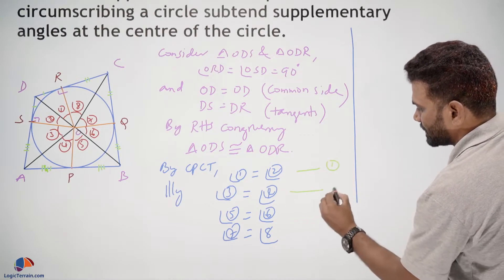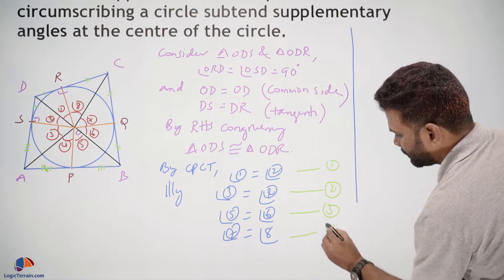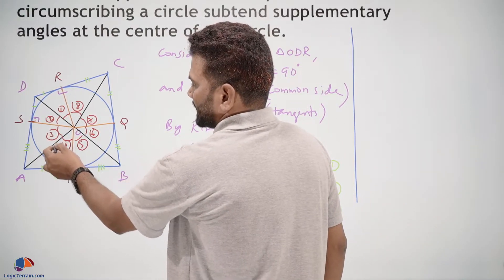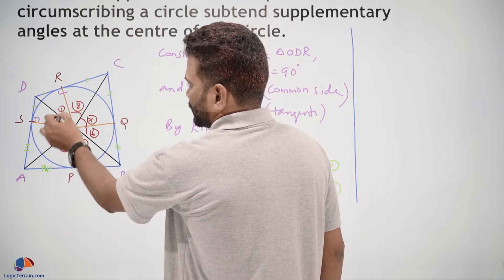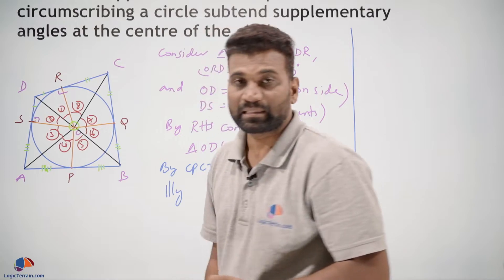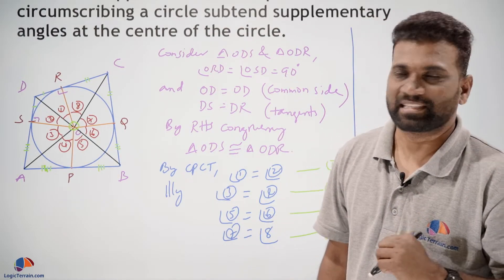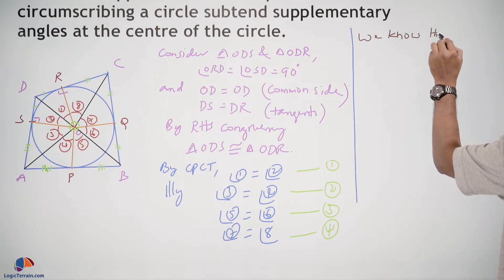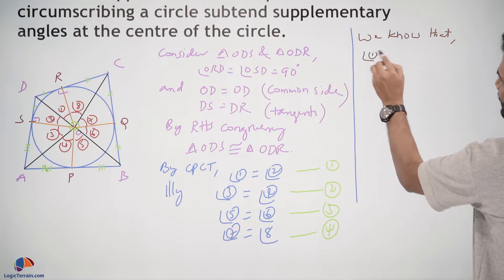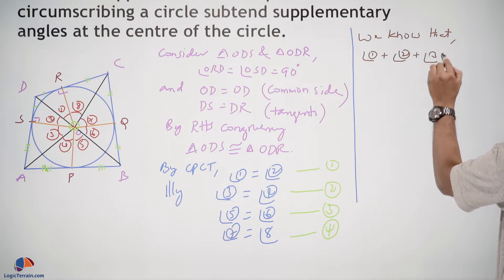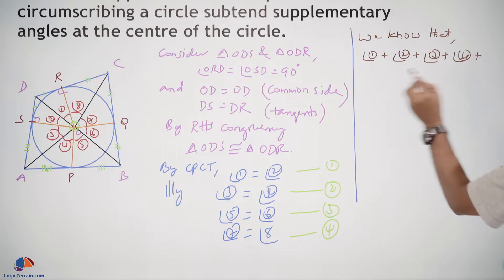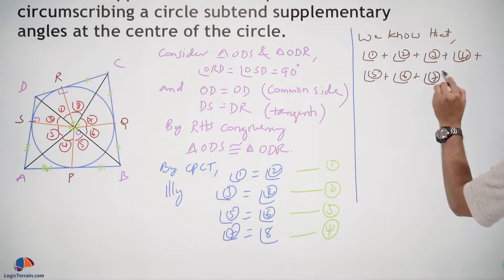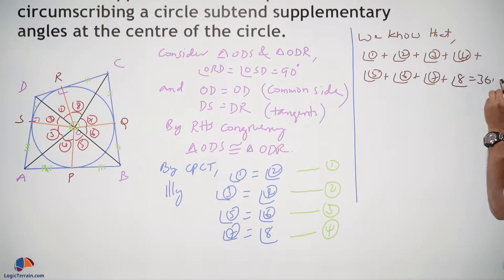Let these results be equations 1, 2, 3, and 4. We know that angle 1 plus angle 2 plus angle 3 plus angle 4 plus angle 5 plus angle 6 plus angle 7 plus angle 8 equals 360 degrees, since all these angles together form a complete circle around center O.